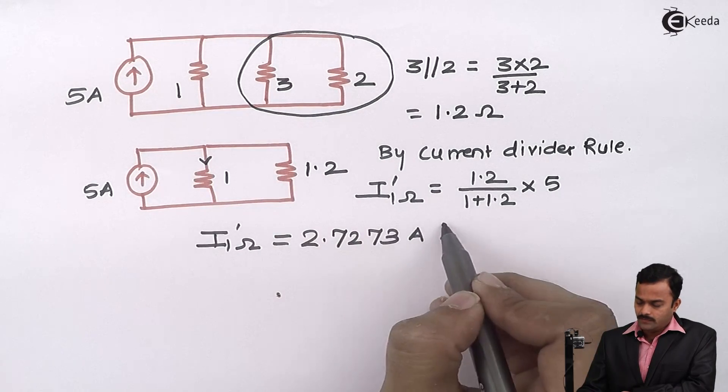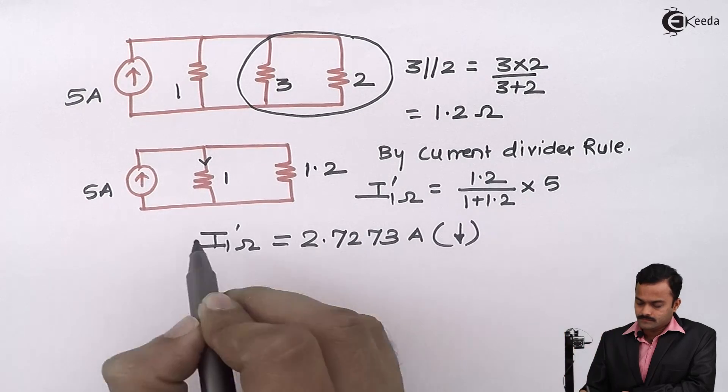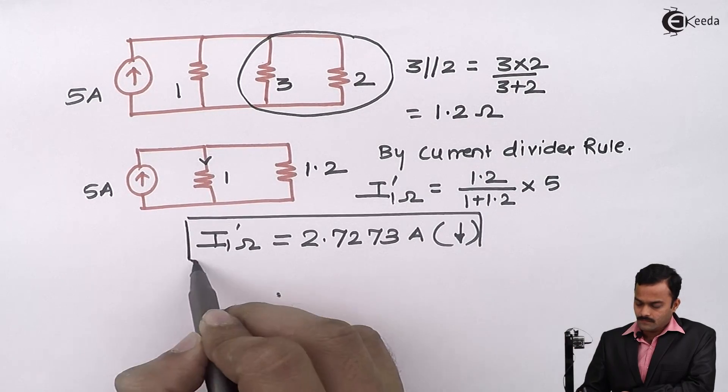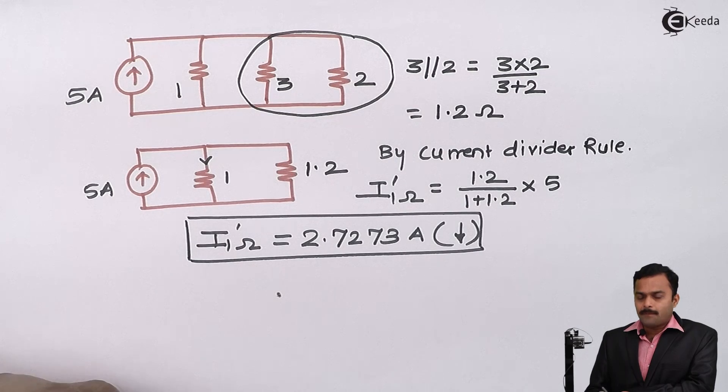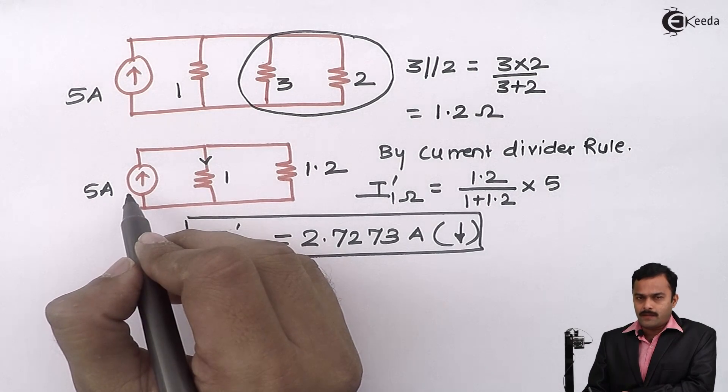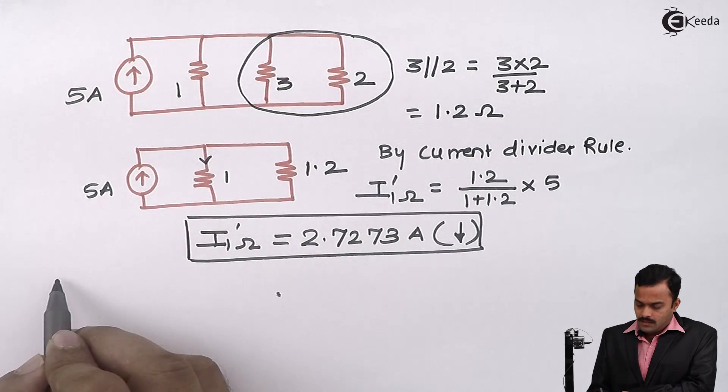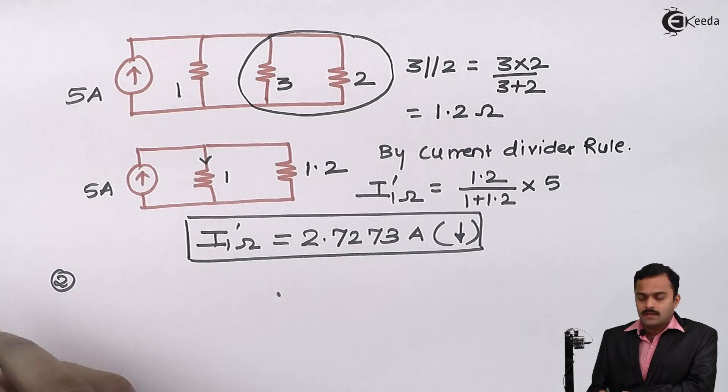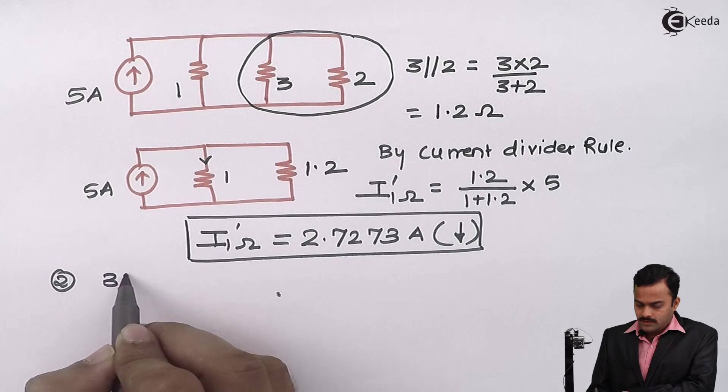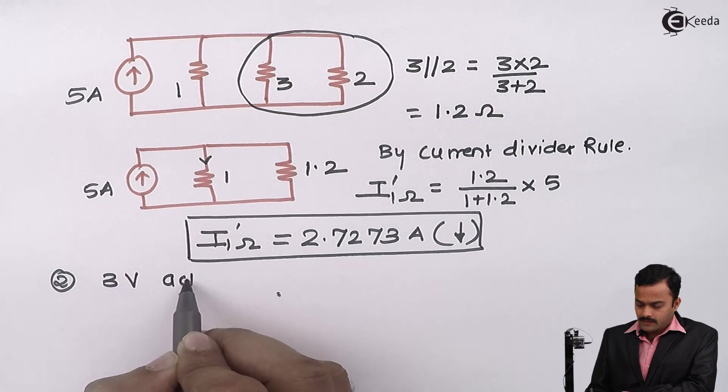I dash 1 ohm will be 2.7273 ampere. The direction of current will be downward. This is a partial answer that I am getting because I am only considering 5 ampere acting alone. Let us go to step number 2 and consider 3 volt acting alone.